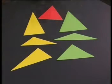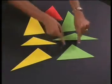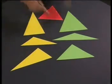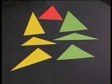Here we have all the isosceles triangles. Remember, we have two equal sides and two equal angles. Here we have a right angled isosceles triangle, an obtuse angled isosceles triangle and an acute angled isosceles triangle.